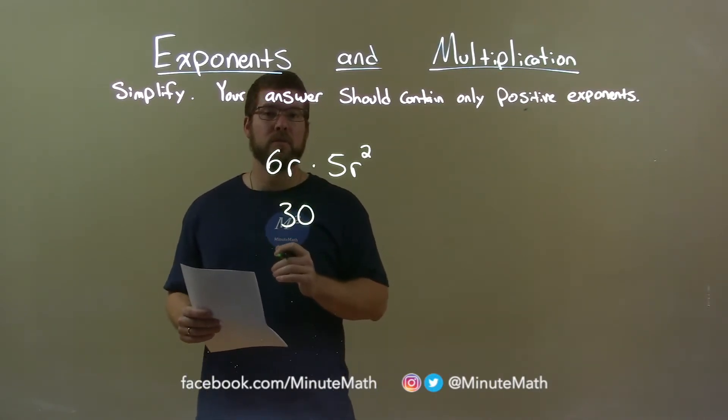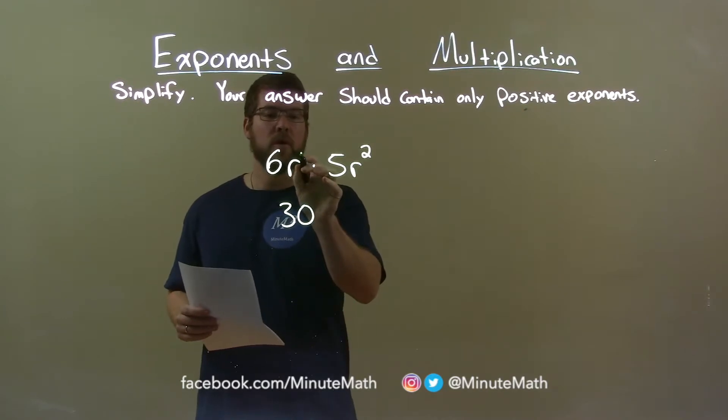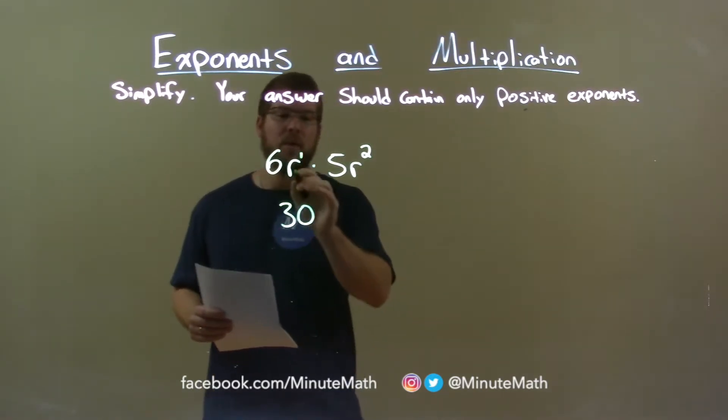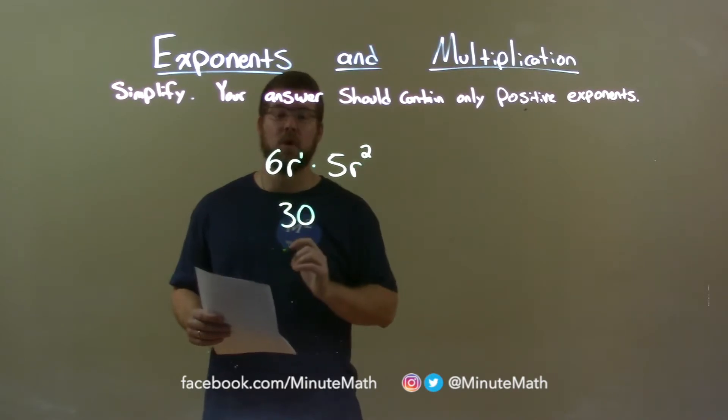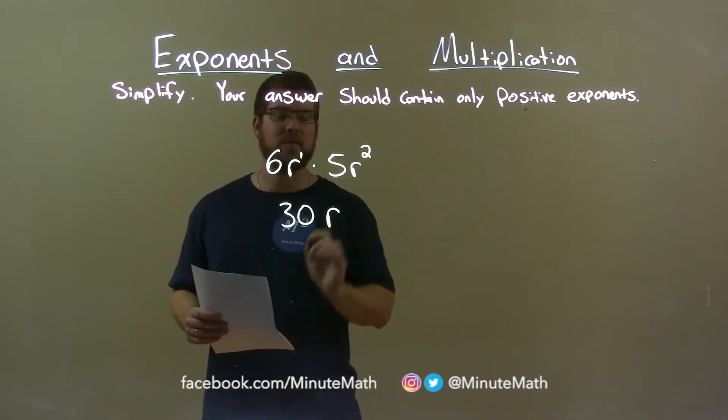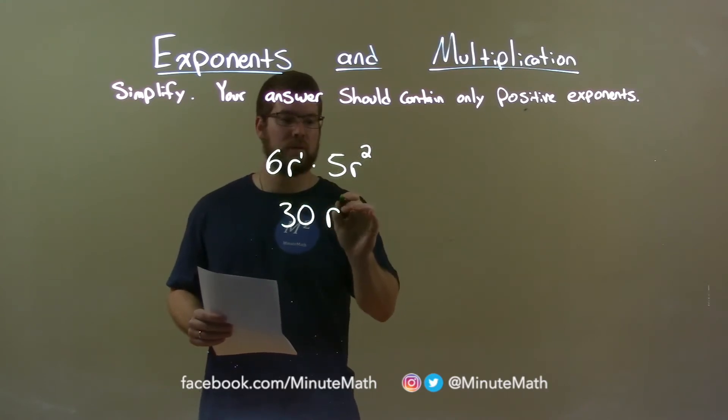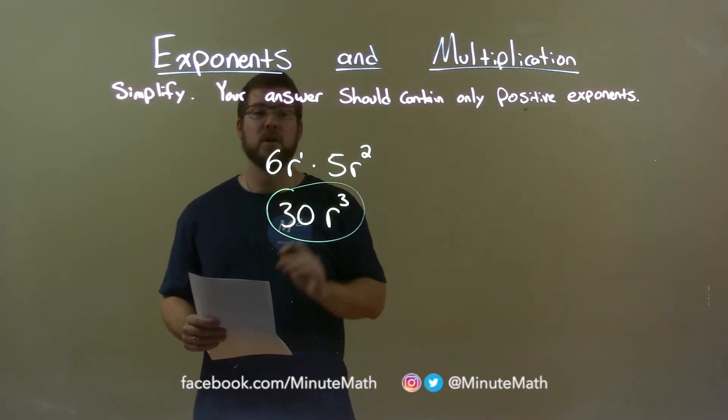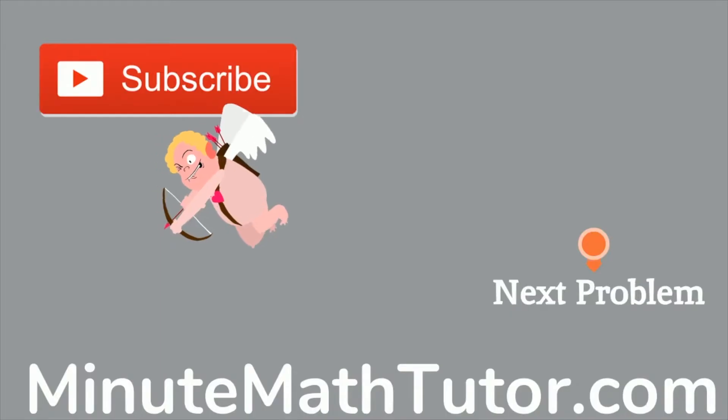Now we have to deal with the variables. Remember, this r is to the first power. When we have the same base, r to the first power times r to the second power, that base stays there but we add the exponents. 1 plus 2 is 3, and so my final answer is 30r cubed.